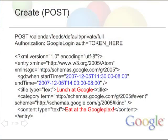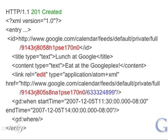Maybe we should invite him to lunch. Here I'm demonstrating how to create an event on his calendar using the POST semantics of HTTP — all we're doing is creating an Atom entry and sending it to the feed. We set the start time to 11:30, add a description, and use the 'event' kind so people know this Atom entry represents a calendar event. Once created, we get a 201 Created response, meaning it was added successfully. We get back the same entry, now with an edit link for future modifications, a unique ID identifying this specific event, and a version string representing this first revision.